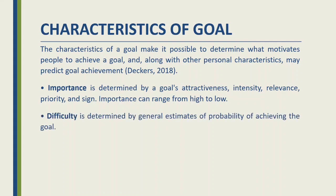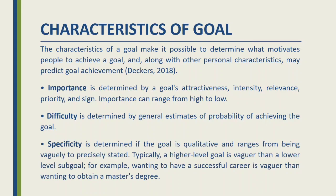The second characteristic is Difficulty. Difficulty is determined by general estimates of the probability of achieving the goal. If the goal is qualitative, it ranges from being vaguely to precisely stated. Typically, a higher-level goal is vaguer than a lower-level sub-goal. For example, wanting to have a successful career is vaguer than wanting to obtain a master's degree.